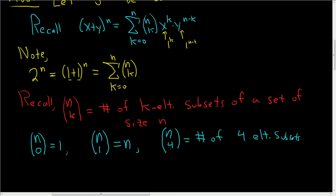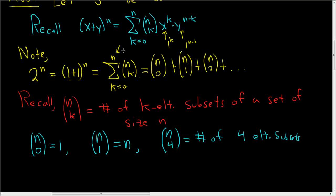We're done with the proof — we just have to explain why. If you work this out, you plug in k = 0, then add n choose 1, then add n choose 2, and you keep adding all the way up to n choose n. So this is an equation: the left-hand side is 2 to the n, and the right-hand side is the number of 0-element subsets, plus the number of 1-element subsets, plus the number of 2-element subsets, all the way to the number of n-element subsets.